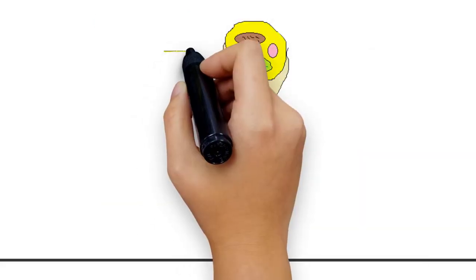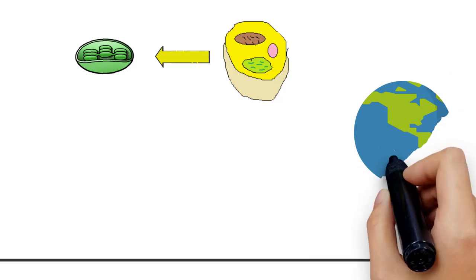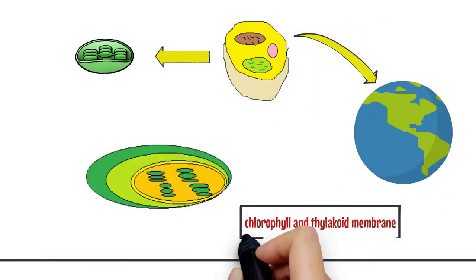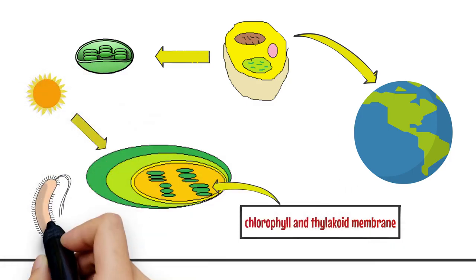It's thought that chloroplasts started out as cyanobacteria cells, organisms that still thrive on Earth today. They're prokaryotic and contain chlorophyll and a thylakoid membrane, which allow them to perform photosynthesis, unlike other bacteria.